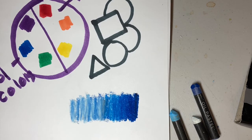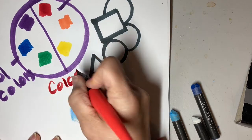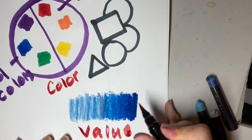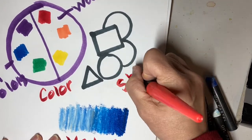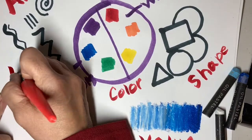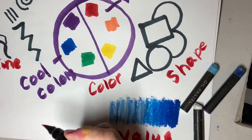So we have color. We have value. We have shape. We have line. And I always forget this one—we have texture.